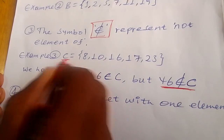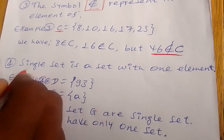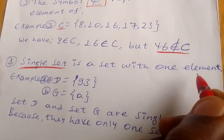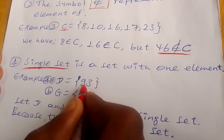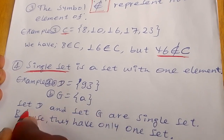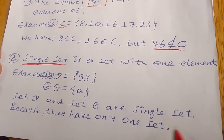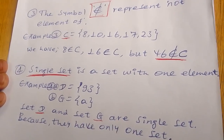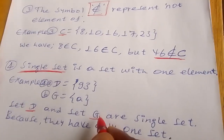The fourth note: a single set, or singleton set. A singleton set is a set with only one element. For example: set D contains 93, and set G contains set D. Set D and set G are singleton sets because they each have only one element.